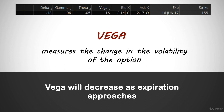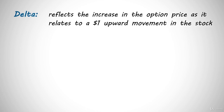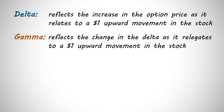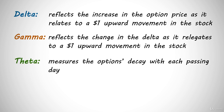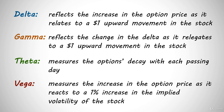That's it for the option Greeks. The Greeks are the most difficult concept for most new traders, but this stuff all starts to be second nature with a little experience. Let's recap: delta reflects the increase in the option price as it relates to a $1 upward movement in the stock; theta is the measurement of the option's decay with each passing day; and vega measures the increase in the option price as it reacts to a 1% increase in the implied volatility of the stock. You now have a good understanding of how each of these Greeks will affect an option's price, and what we need to have happen so that we may profit when trading options. The Greeks can be a tough section, so let's go ahead and take a break here, and we'll pick it up right where we left off in our next lesson.